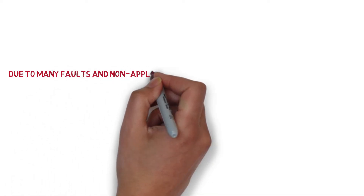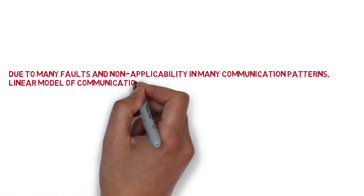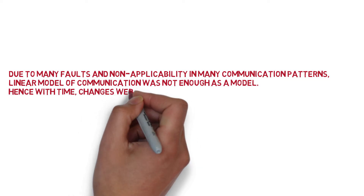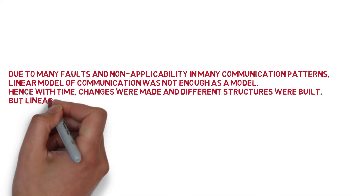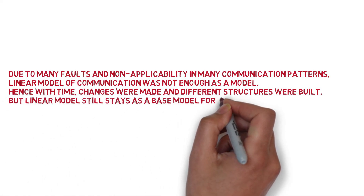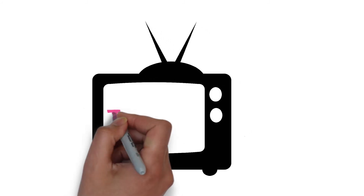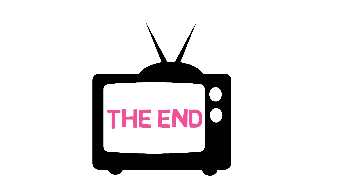Due to its many faults and non-applicability in many communication patterns, the linear model of communication was not enough on its own. Hence, with time, changes were made and different structures were built. But the linear model still stays as a base model for every communication form.